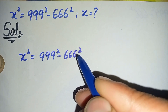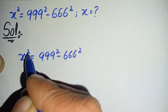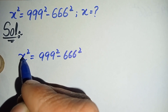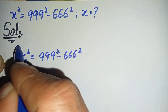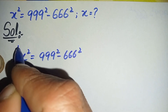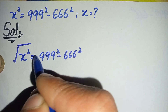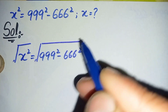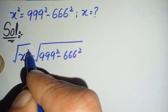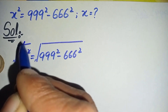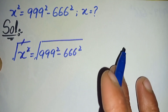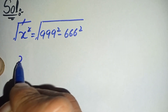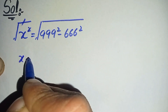Now first of all I will try to eliminate this square from the left hand side. So to eliminate this square we will take square root on both sides. This square and this square root will be cancelled with each other, so only x will be left on the left hand side.